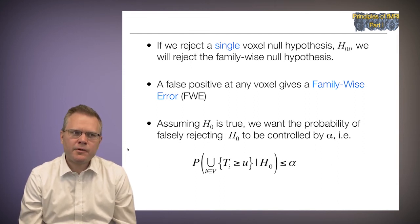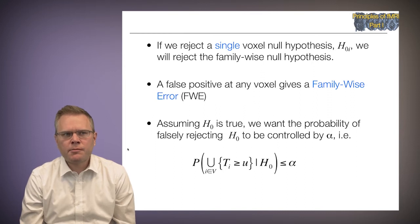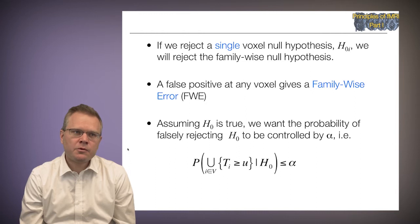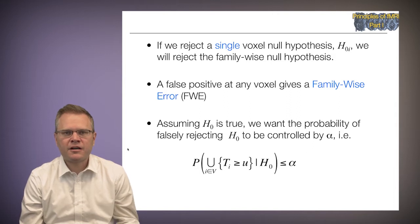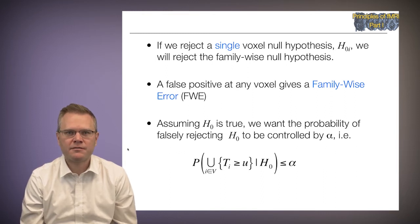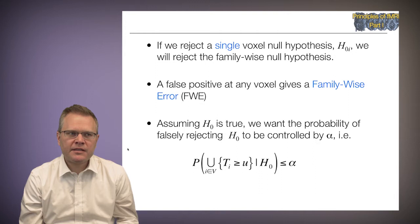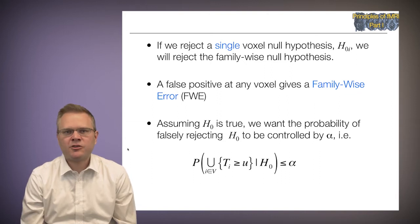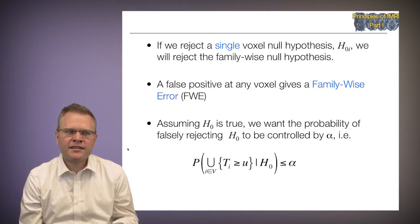Assuming the family-wise null hypothesis is true, we want to control the probability of falsely rejecting H0 at some level alpha. We want to control the probability that any test statistic across the entire brain is above some value u, because if it's above u, we reject the null hypothesis at that voxel and get a false positive. So we need to find the value of u that controls the family-wise error rate at alpha.